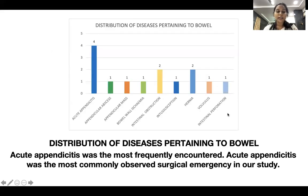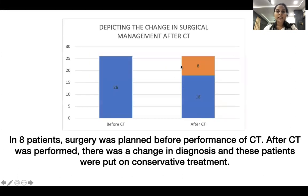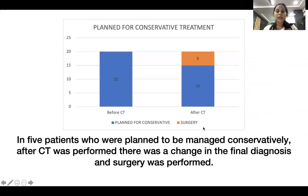Among diseases pertaining to the bowel, acute appendicitis was most frequently encountered and is the most commonly observed surgical emergency in our study. Regarding the change in surgical management after CT: in 8 patients, surgery was planned before CT was performed, but after CT there was a change in diagnosis and these patients were put on conservative management. Conversely, in 5 patients planned for conservative management, CT changed the diagnosis and they were posted for surgery immediately.